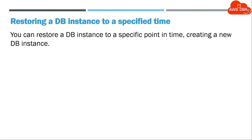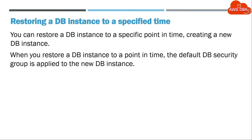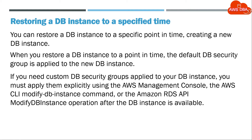You can restore a DB instance to a specific point in time, creating a new DB instance. When you restore a DB instance to a point in time, the default DB security group is applied to the new DB instance. If you need custom DB security groups applied to your DB instance, you must apply them explicitly using the AWS Management Console, the AWS CLI Modify DB Instance command, or the Amazon RDS API Modified by Instance operation, after the DB instance is available.